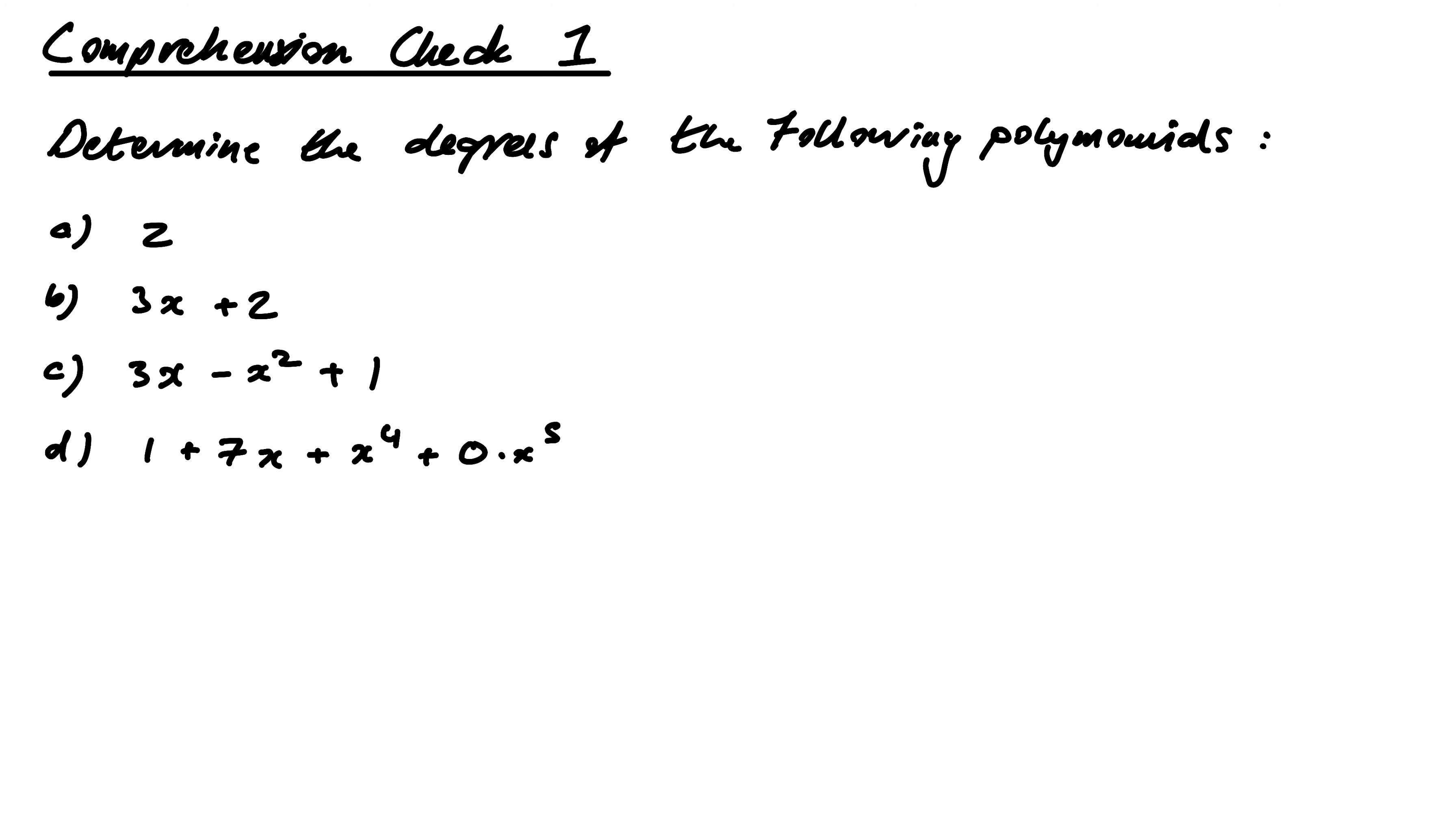Namely, you take x, you multiply it by itself a bunch to get powers, you multiply those by some fixed numbers called coefficients, they're constant, and you just add stuff up.